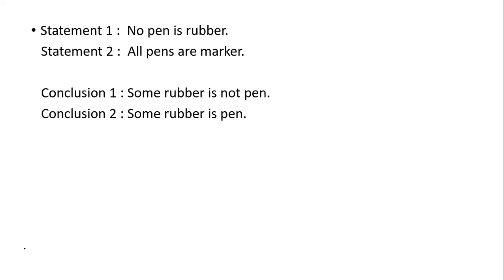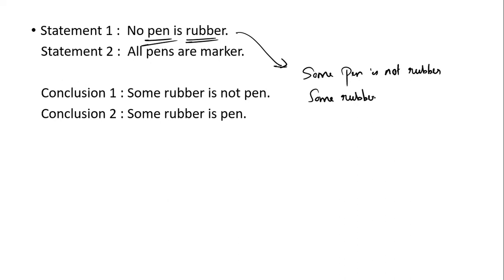But rubber is what? The rule called no can be split into two: some pen is not pen, some rubber is not pen. Some rubber is not pen — some rubber is pen — one conclusion. We have two special cases: only one — we have two conclusions. We have two complementary pairs. Variables: some-no and all some-notes. See you in the next video.